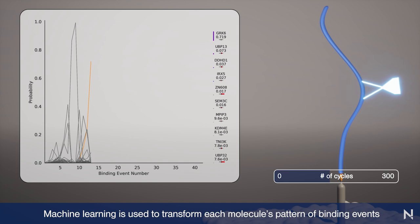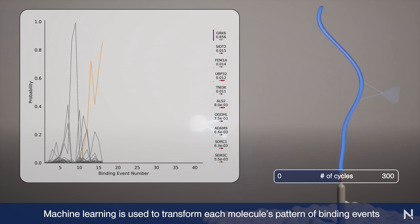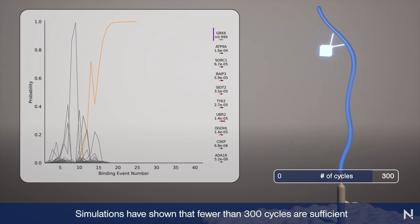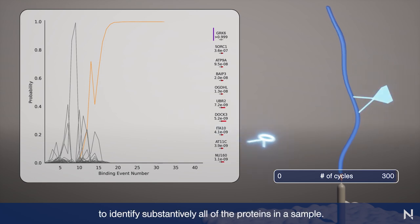Machine learning is used to transform each molecule's pattern of binding events into a protein identity. Simulations have shown that fewer than 300 cycles are sufficient to identify substantively all of the proteins in a sample.